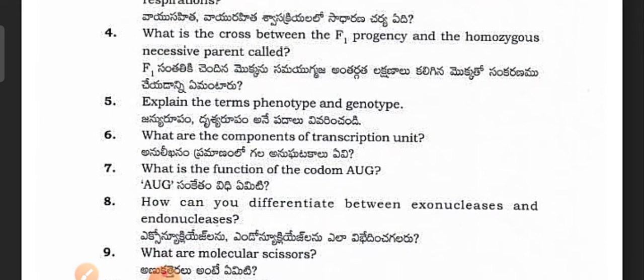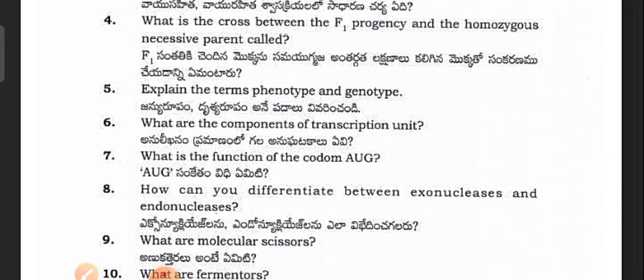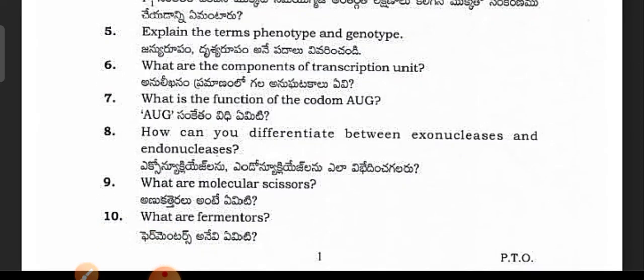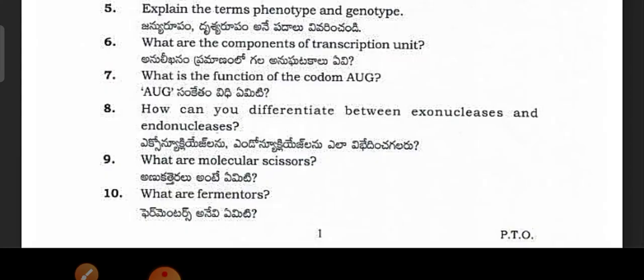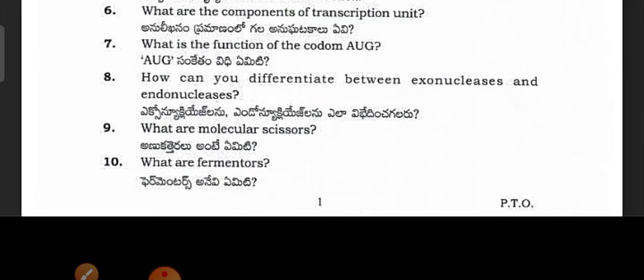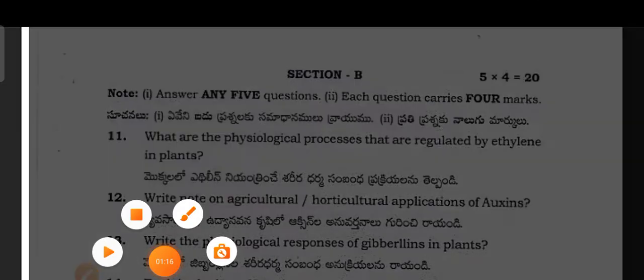What is the cross between the F1 progeny and the homozygous recessive parent called? How can you differentiate between exonucleases and endonucleases? What are the molecular scissors? — Restriction endonucleases. Next, section B questions.